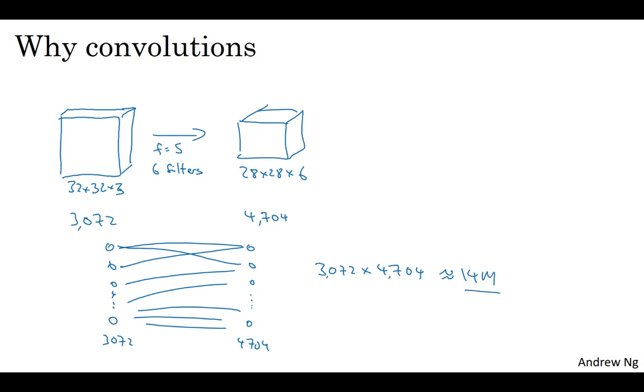So, that's just a lot of parameters to train. And today, you can train neural networks with even more parameters than 14 million, but considering that this is just a pretty small image, this is a lot of parameters to train.